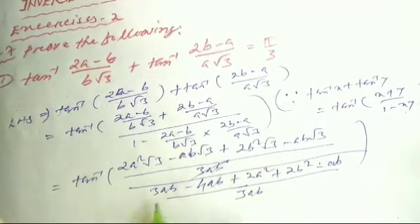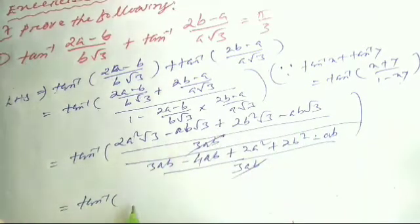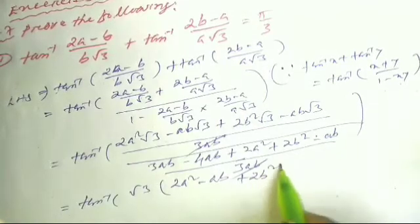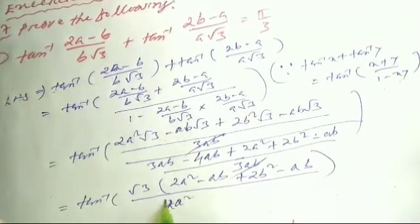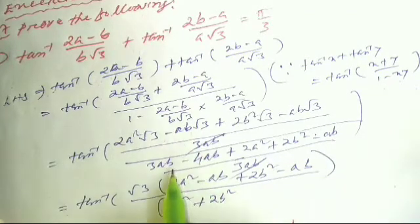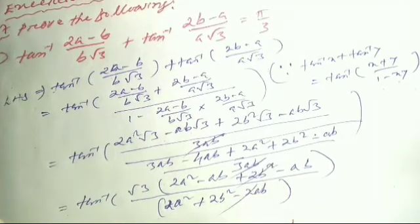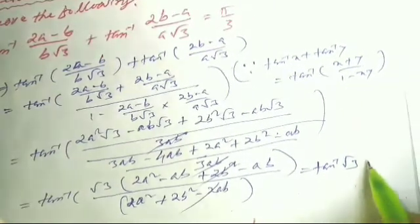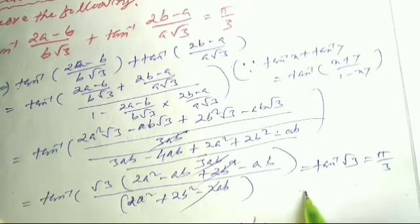The 3ab cancels. The numerator simplifies to √3×(2a² − ab + 2b² − ab) = √3×(2a² + 2b² − 2ab). Dividing: the whole expression reduces to tan⁻¹(√3). And since tan⁻¹(√3) = π/3, this equals RHS. Proved.